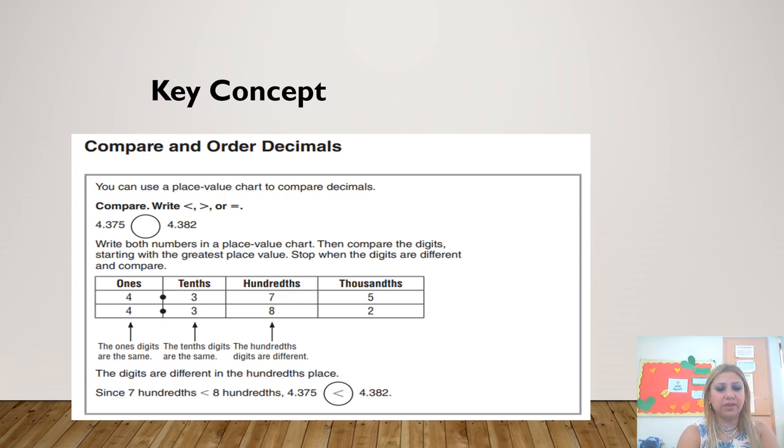This is our key concept. If I want to compare decimals, it is really easier for us to line them up in the place value chart, then find the difference in the amounts. Or you can put them just next to each other and a circle in the middle. Then you start comparing starting from the left side, starting from the ones.